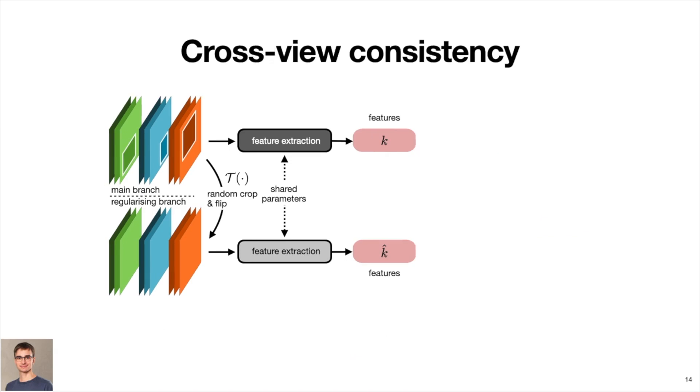Similarly, we compute the cross-view consistency by also sampling the features from the regularizing branch on a uniform grid. Note that the features in both the main and the regularizing branches are spatially aligned here with the help of the similarity transformation that we use to generate the input to the regularizing branch. We compute the cosine distance between the corresponding features in both views.